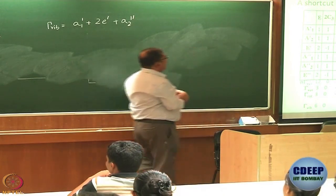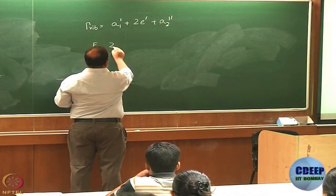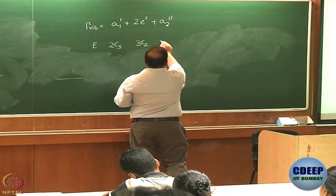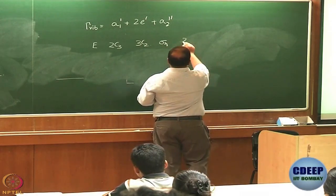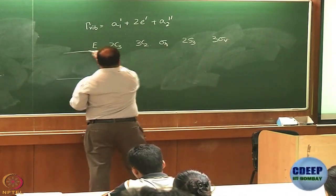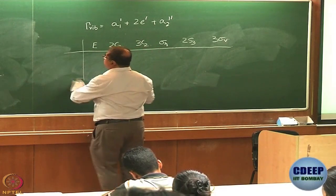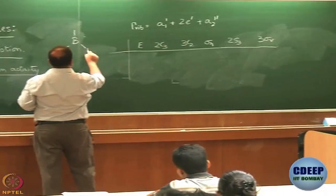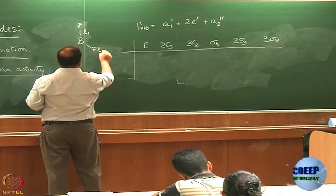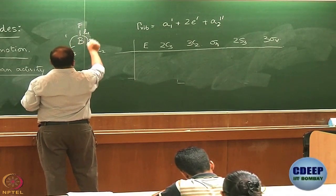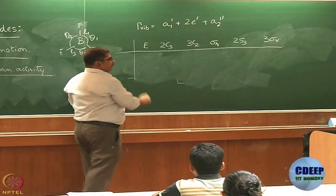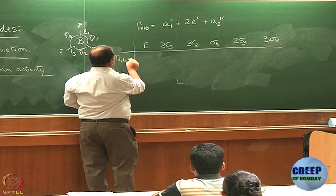So what I will need to do is, I will need to write this: E, 2C3, 3C2, sigma H, 2S3, 3 sigma V. So we are dealing with this molecule, say BF3. Let me call these angles theta 1, theta 2, theta 3. So what is gamma L1, L2, L3? Can we figure that out?